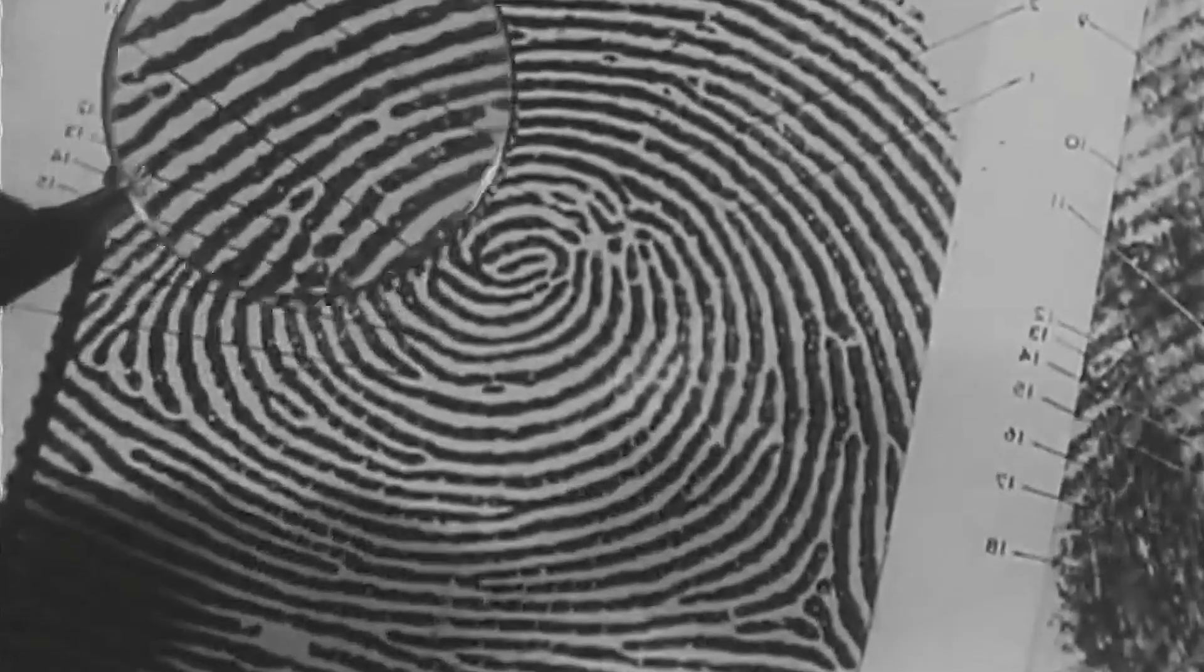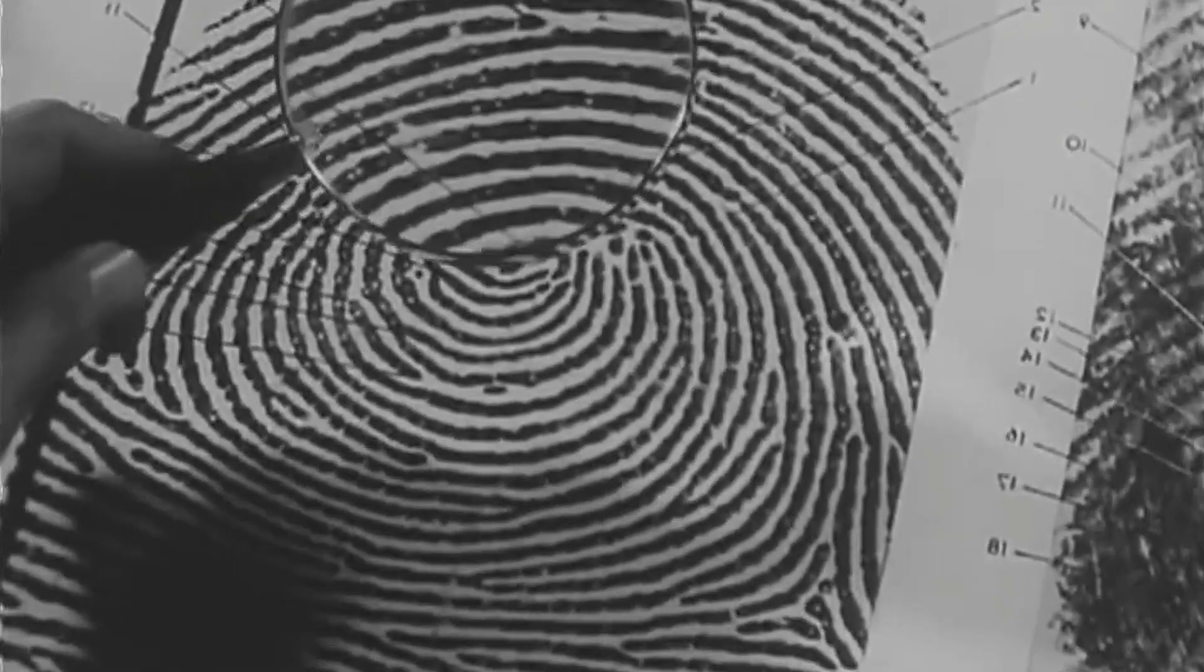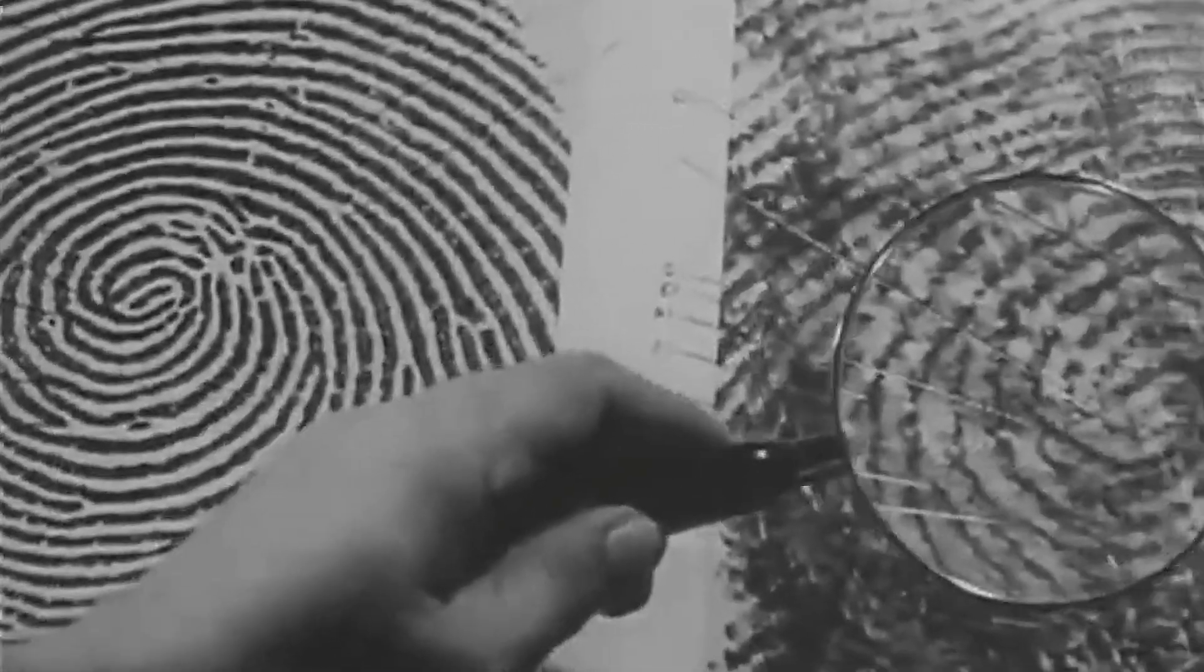Around the same time in the late 1970s, forensic scientists in the UK, Canada, and Japan all independently discovered that superglue could be used for latent fingerprint development.